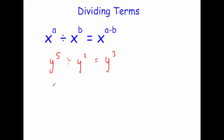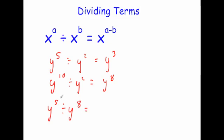If you had y to the 10 divided by y to the 2, again you take away the powers so it'll be y to the power of 8. If you have y to the 5 divided by y to the 8, you're going to take away — but be careful: 5 take away 8 is minus 3, so it'll be y to the minus 3.